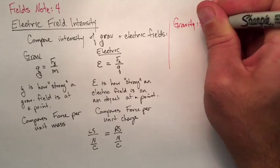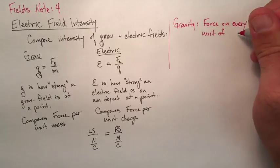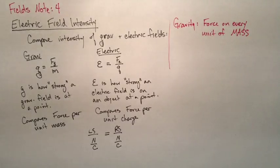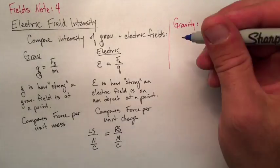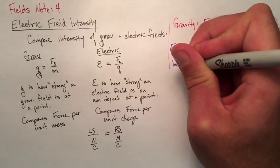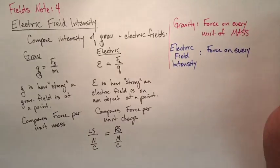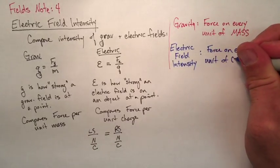So again, just to summarize, gravity is a force on every unit of mass. In this case, for electric field intensity, it's a force on every unit of charge of an object. So only if an object is charged, it will feel electric intensity due to some sort of a charged object.